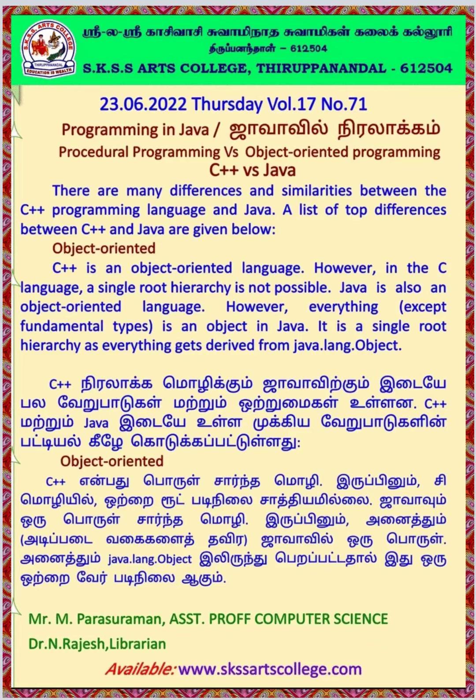Object oriented: C++ is an object oriented language; however, in the C language, a single root hierarchy is not possible. Java is also an object oriented language; however, everything is an object in Java. It is a single root hierarchy as everything gets derived from java.lang.Object.